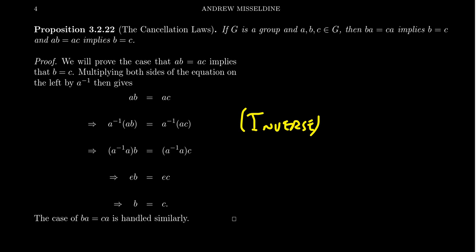Now because the group is well, a group, we can reassociate the parentheses. The associative property says that we can redo the parentheses so that I'm actually going to instead look at a inverse a times b and a inverse a times c. Since these are inverses, they multiply: a inverse a is going to give us e.